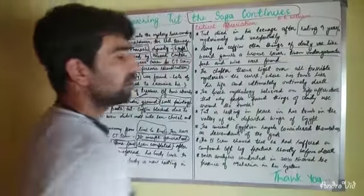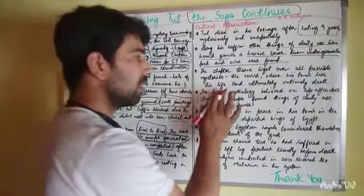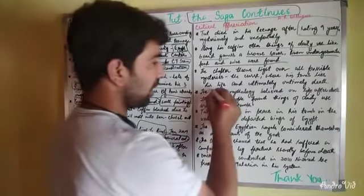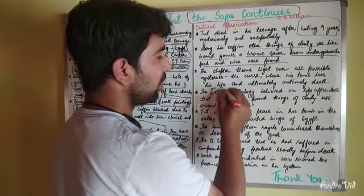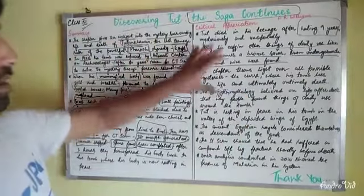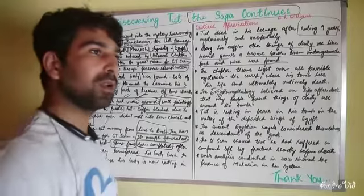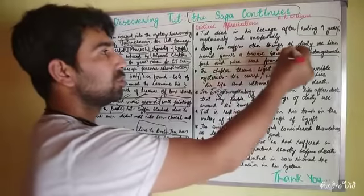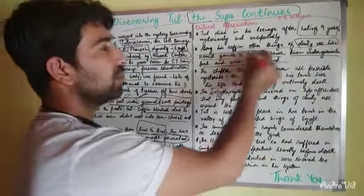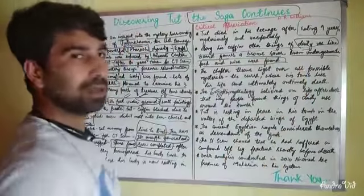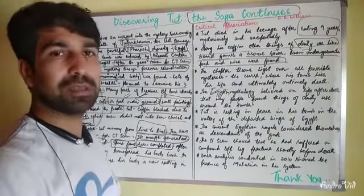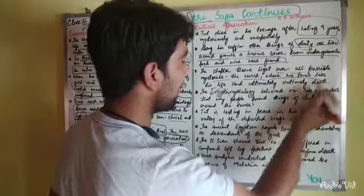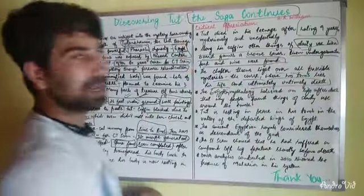According to Egyptian mythology, people have life after death. That is why they made provisions for the dead person to enjoy life after death as well — by sending things of daily use with his coffin and burying them. The belief was that he would use these things after death. The chapter throws light on all possible mysteries and the curse surrounding his life and untimely death.